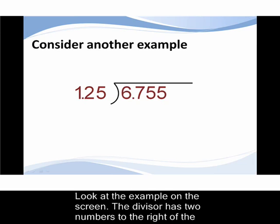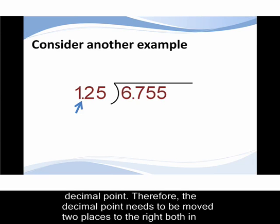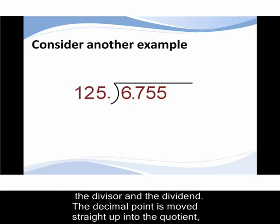Look at the example on the screen. The divisor has two numbers to the right of the decimal point. Therefore the decimal point needs to move to the right two spaces in both the divisor and the dividend.